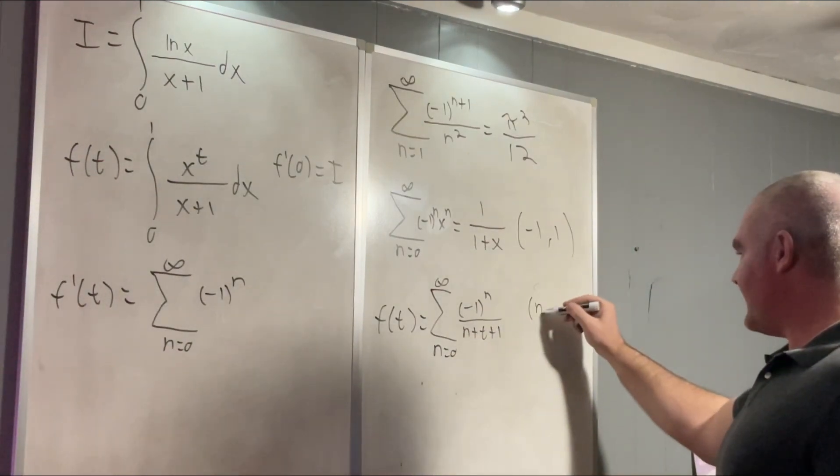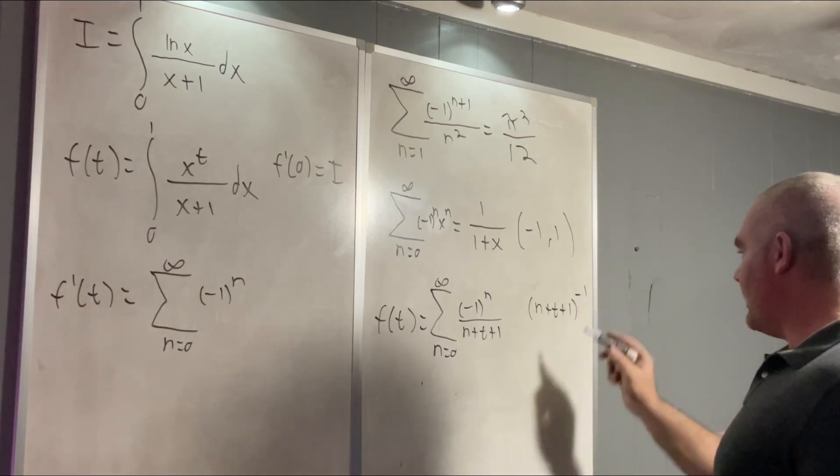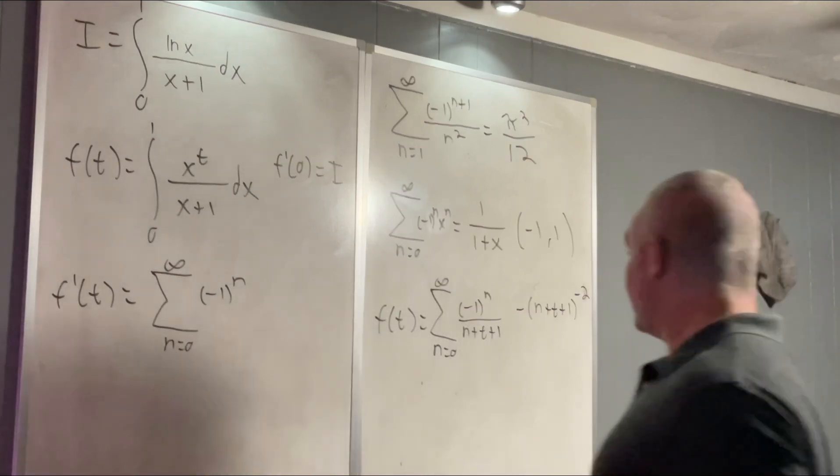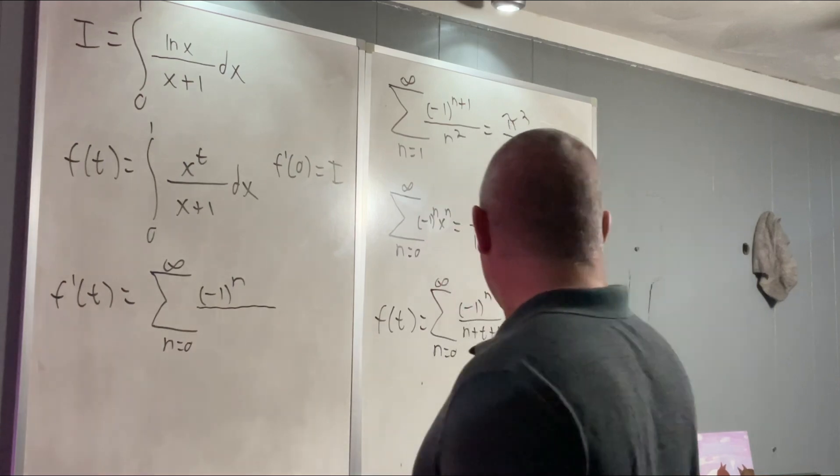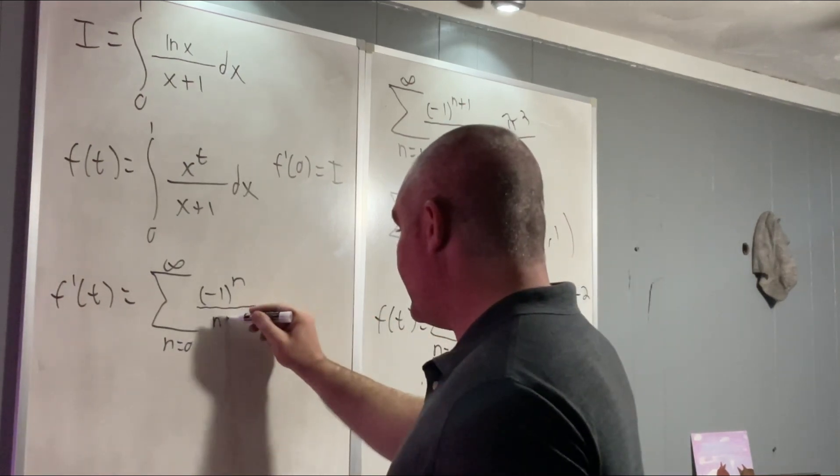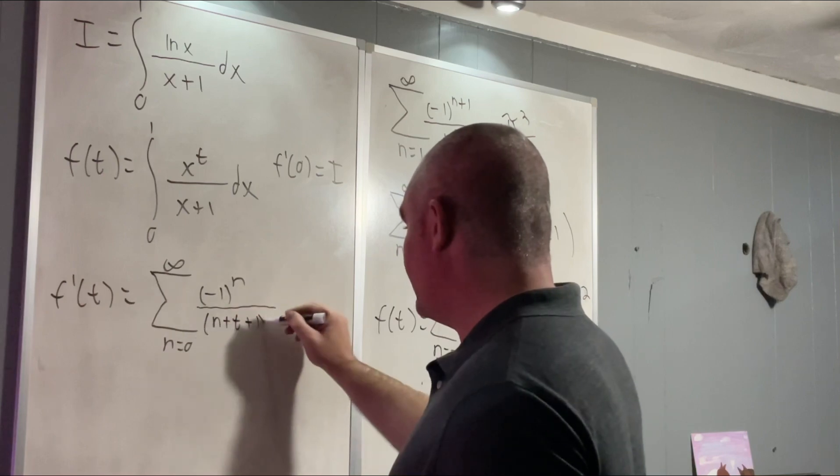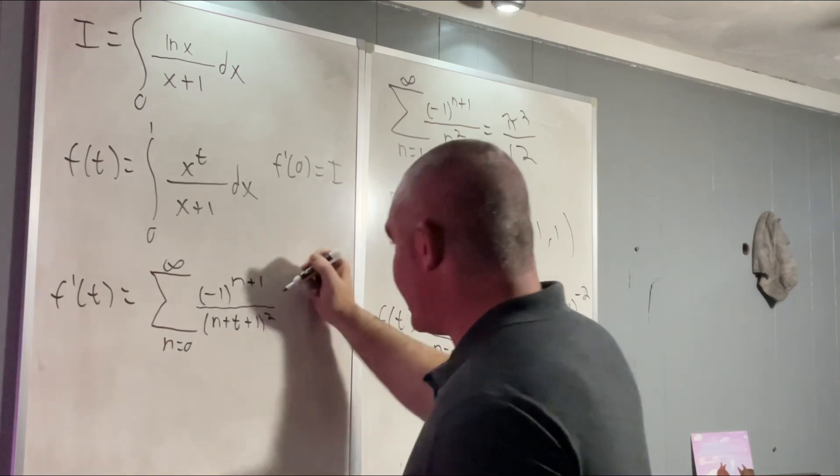Remember, this is just n plus t plus 1 to the negative 1. So if we took a derivative, we'd get negative 2 to the negative 2. So that's just going to be n plus t plus 1 squared.